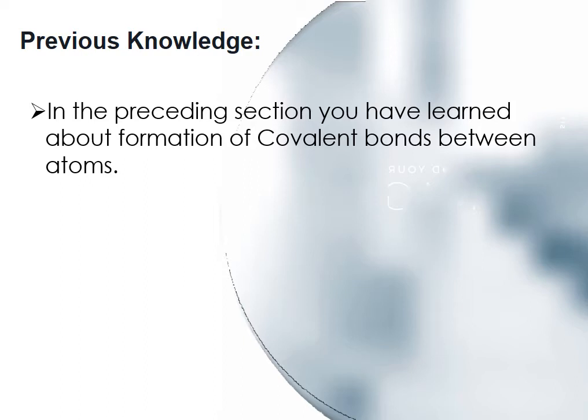For example, in H2, two hydrogen atoms share their electrons to form H2. In N2, two nitrogen atoms share their electrons to form N2. For dissimilar atoms, for example HCl, hydrogen and chlorine share their electrons to form hydrochloric acid, which is HCl.